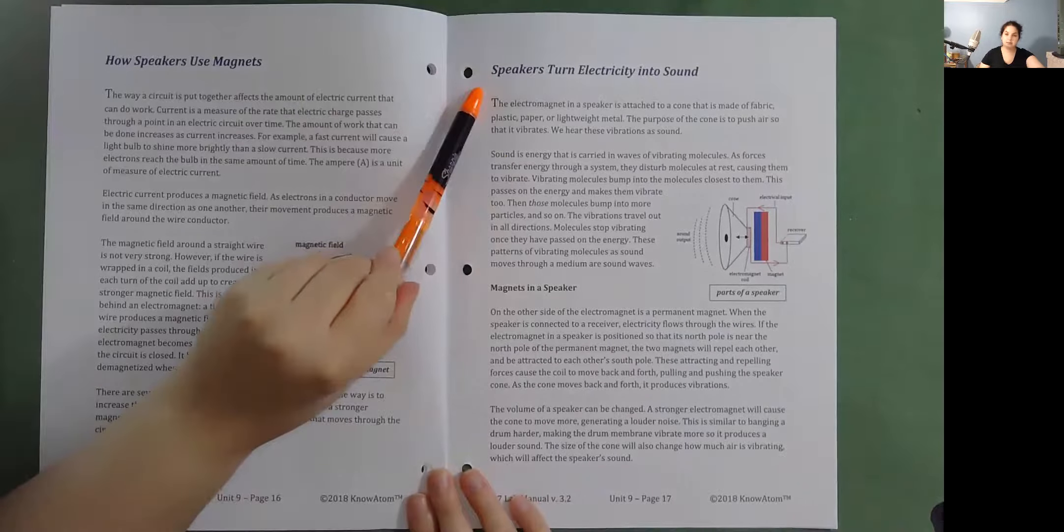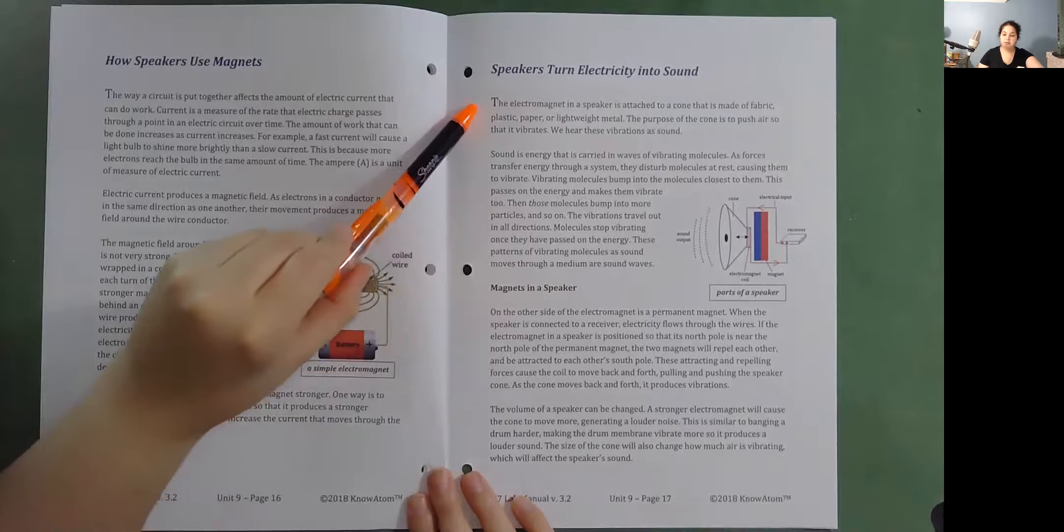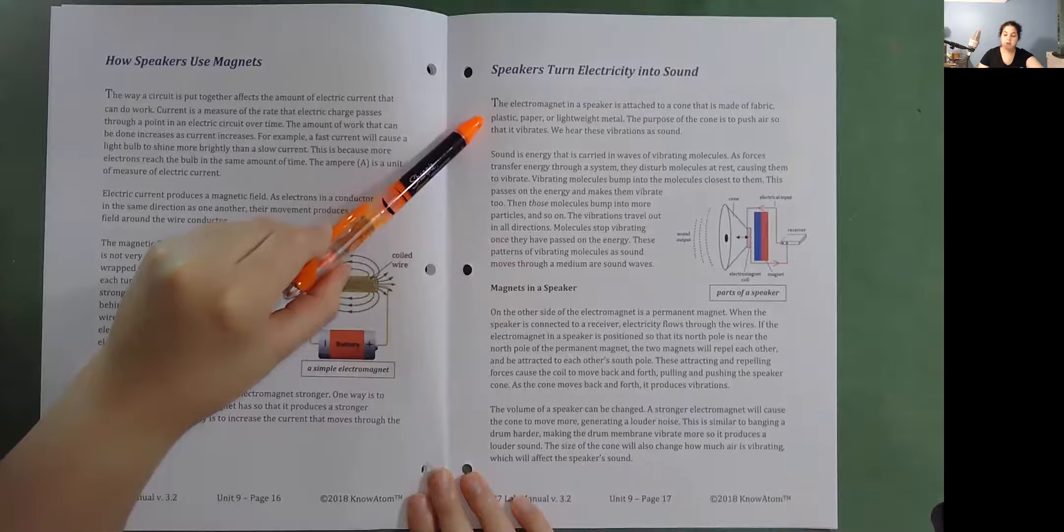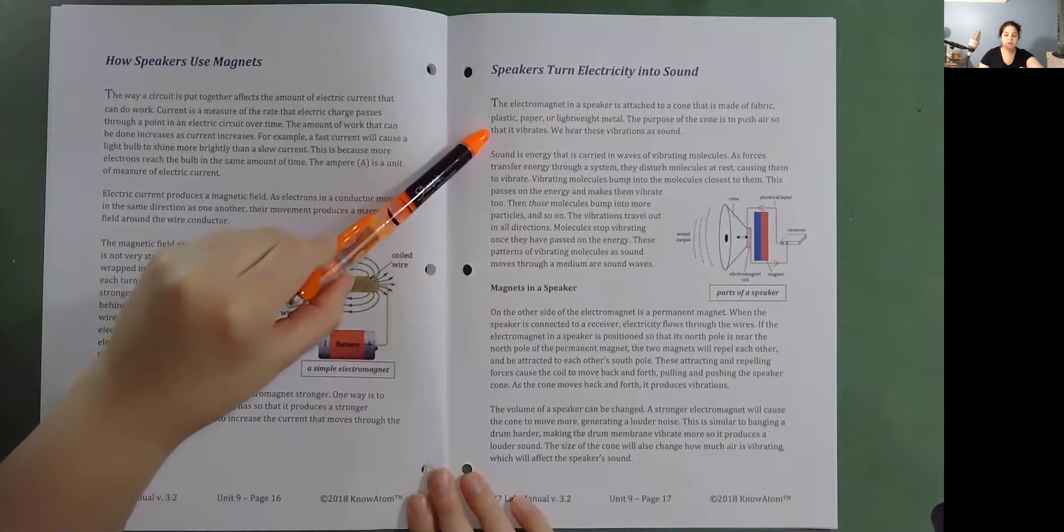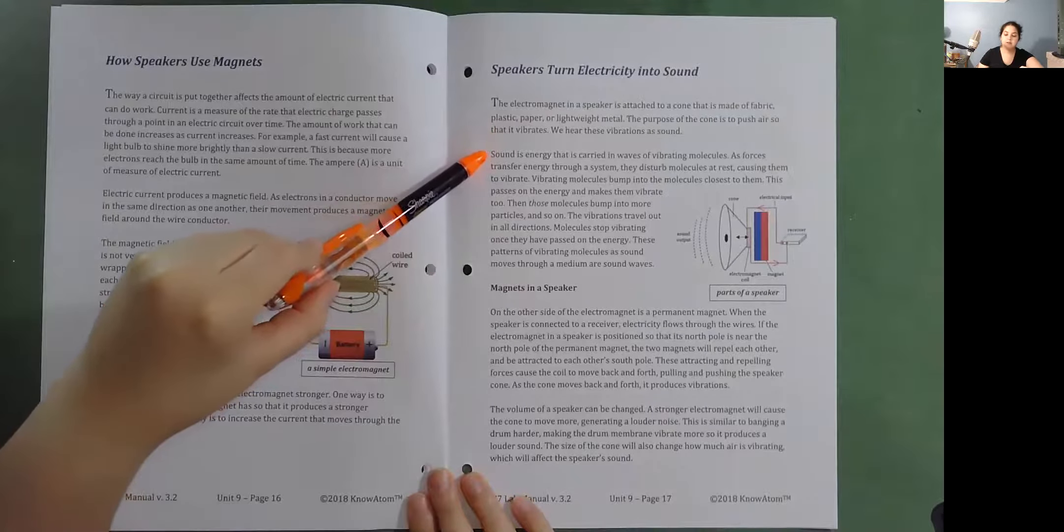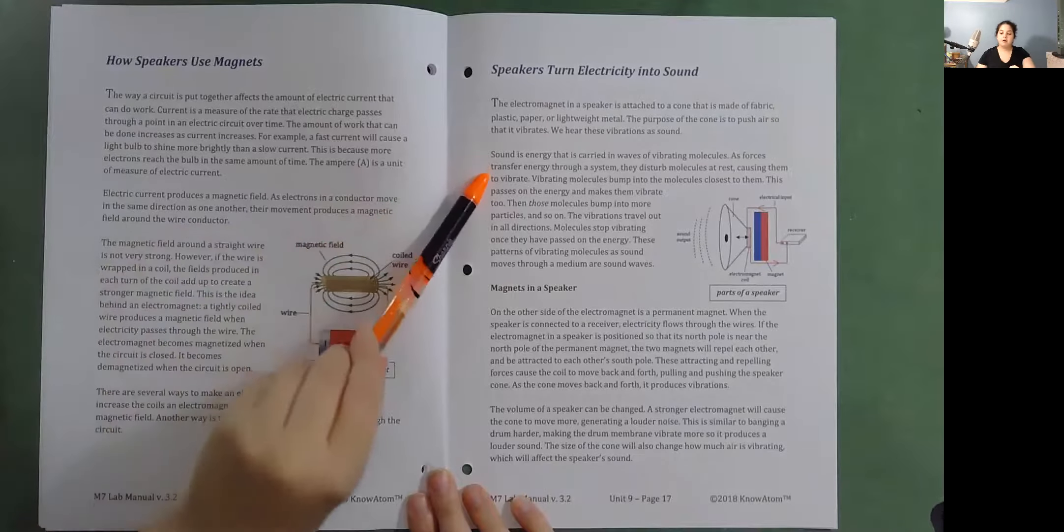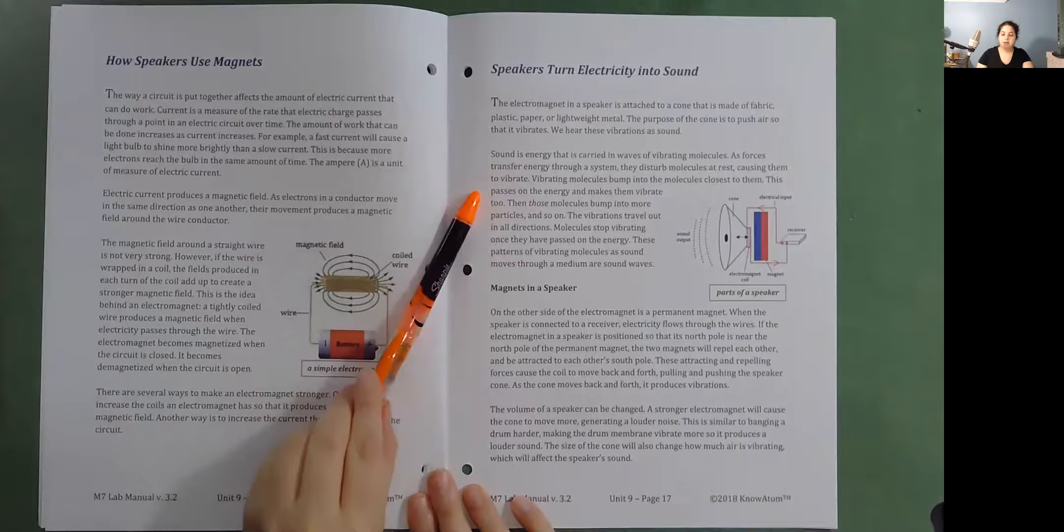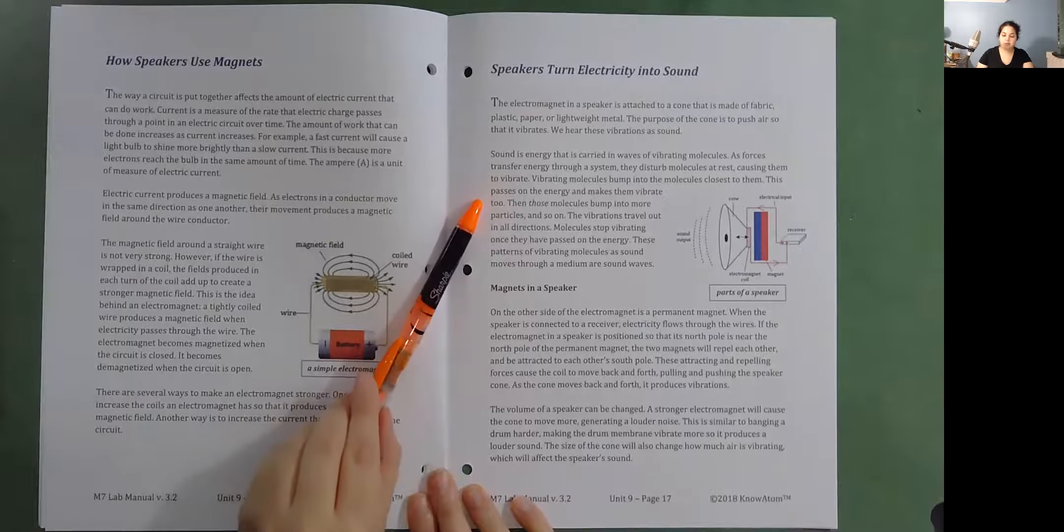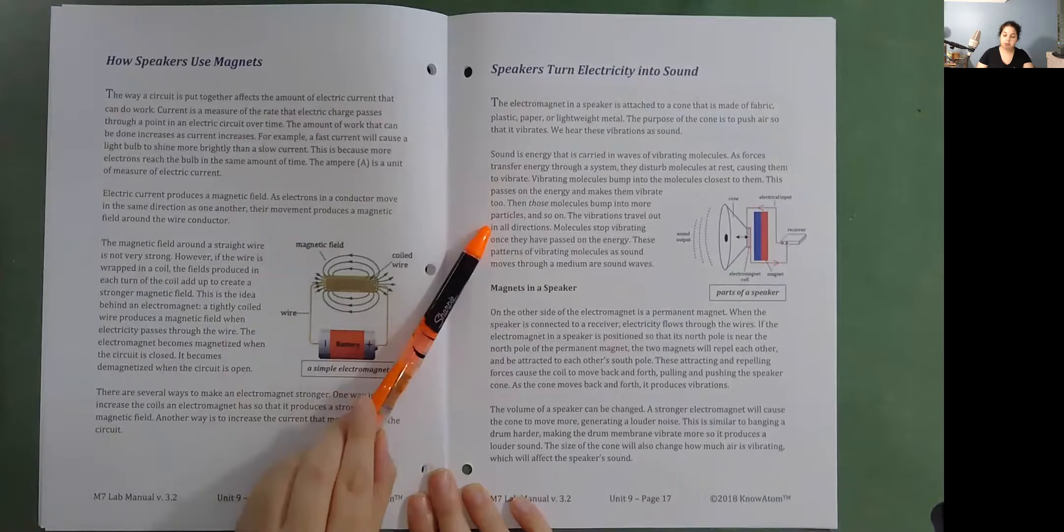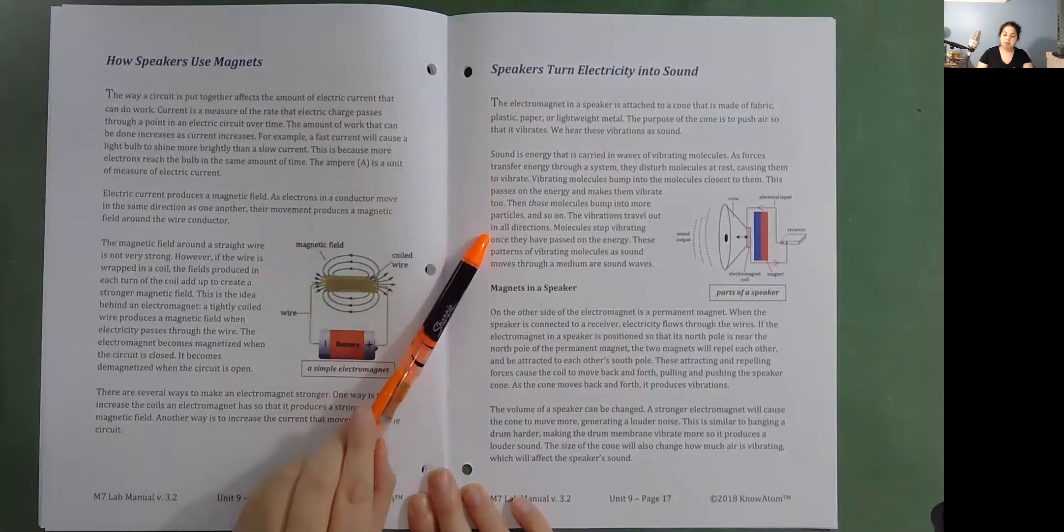Speakers turn electricity into sound. The electromagnet in a speaker is attached to a cone that is made of fabric, plastic, paper, or lightweight metal. The purpose of the cone is to push air so that it vibrates. We hear these vibrations as sound. Sound is energy that is carried in waves of vibrating molecules. As forces transfer energy through a system, they disturb molecules at rest, causing them to vibrate. Vibrating molecules bump into the molecules closest to them. This passes on the energy and makes them vibrate too. Then those molecules bump into more particles and so on. The vibrations travel out in all directions. Molecules stop vibrating once they have passed on the energy. These patterns of vibrating molecules as sound moves through a medium are sound waves.